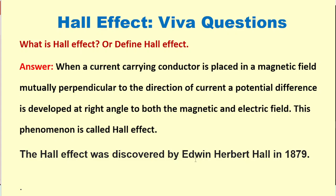Now we move to the viva questions which are basically asked on this experiment. So first question is just a basic question: What is Hall effect or define Hall effect? So it is when a current carrying conductor or semiconductor is placed in a magnetic field, then there is a potential difference developed at right angles to both the magnetic field and electric field, and this phenomena is known as Hall effect. This was named due to its discovery by Edwin Hall in 1879.